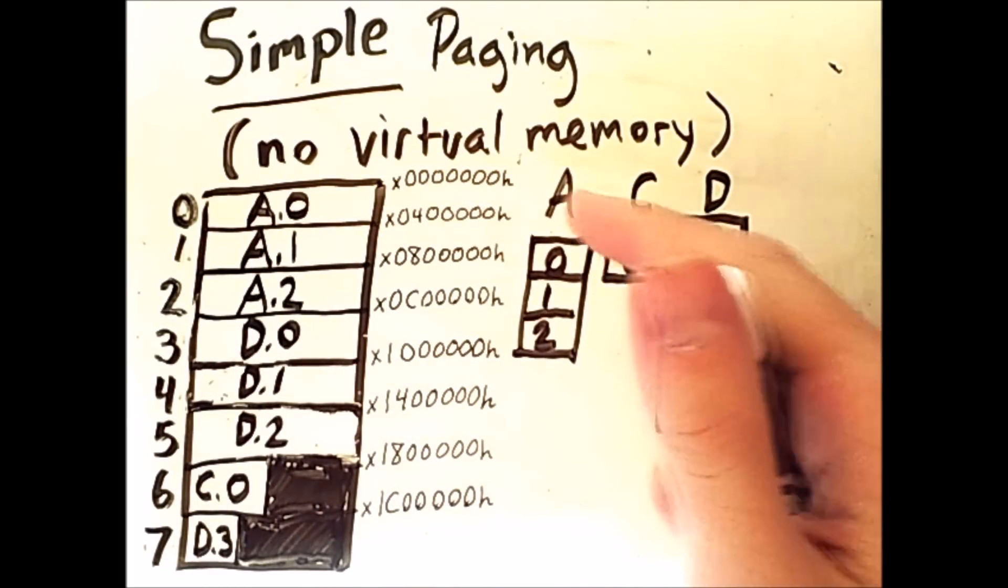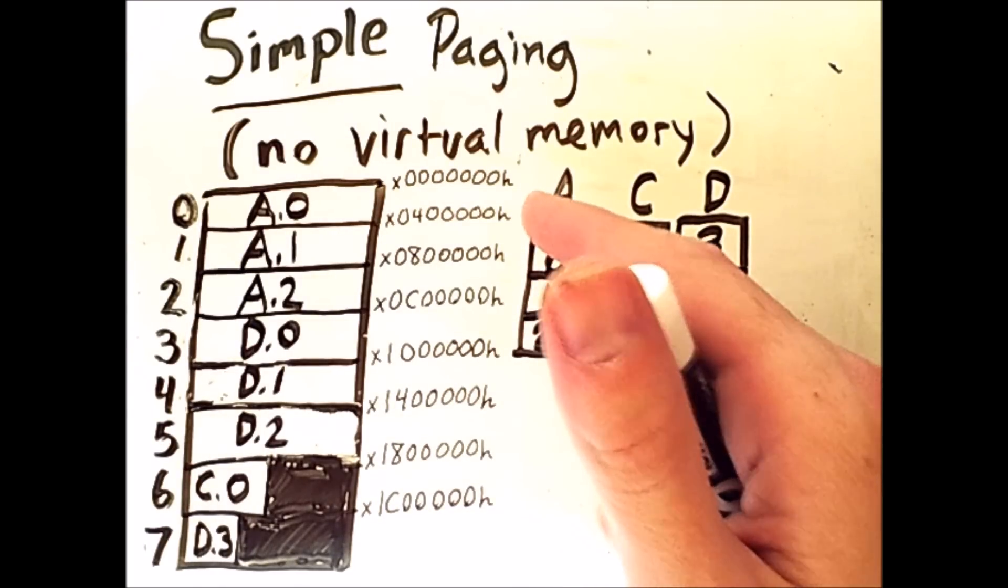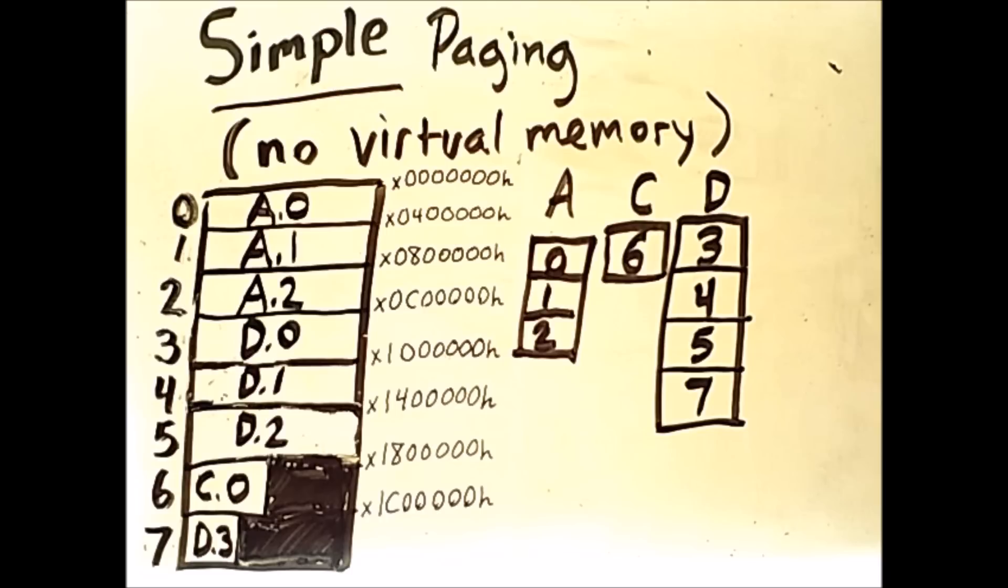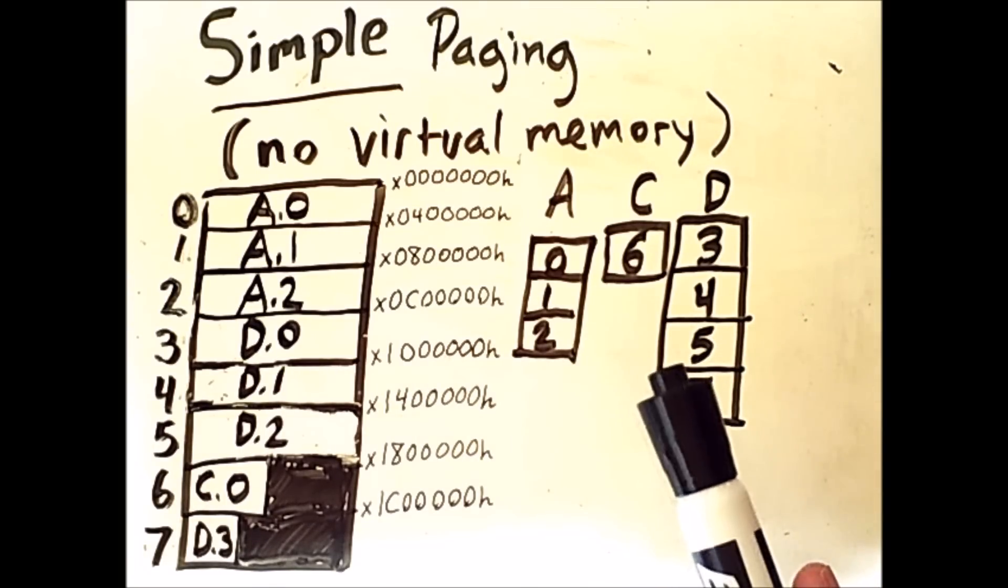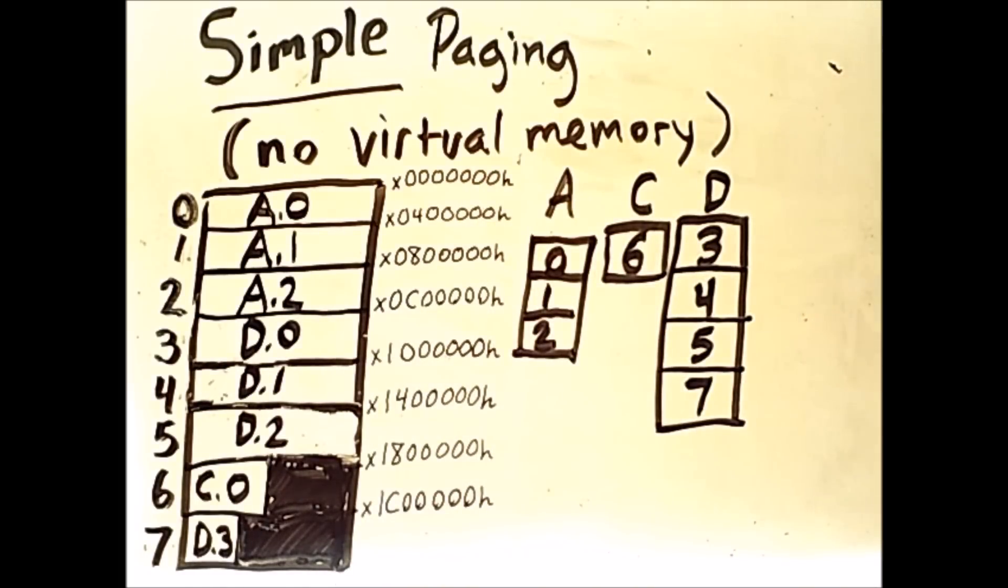So these are hexadecimal address values. These are the actual memory addresses at the boundaries between the frames. So what I'm going to show you next is how the processor and the operating system can use page tables to figure out where the different pieces of the processes are stored in memory. Now, this requires some special hardware that the operating system is designed to use. So let's take a look at how this works.